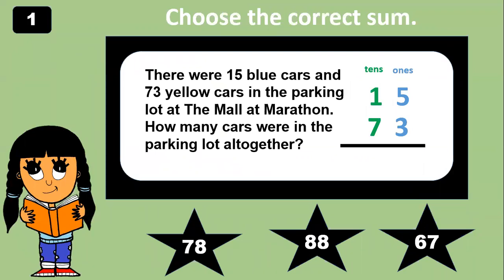Let's practice. There were 15 blue cars and 73 yellow cars in the parking lot at the mall at Marathon. How many cars were in the parking lot altogether? Step one, add the ones. Step two, add the tens. Do you know the sum? 88. Wonderful. Five plus three equals eight. One plus seven equals eight.